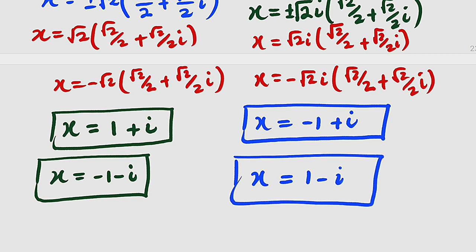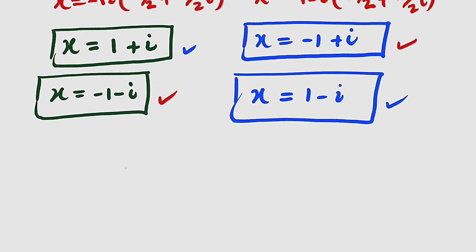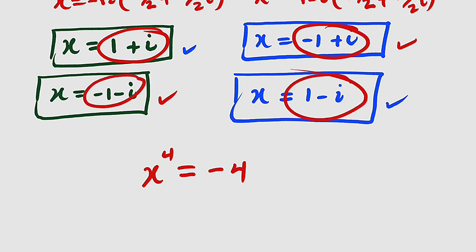If you observe, all four complex numbers are different. Another thing to note is that 1 plus i and negative 1 minus i are conjugates of each other. Likewise, negative 1 plus i and 1 minus i are conjugates of each other. So even if you obtain one complex solution, its conjugate will also be a solution. As an assignment: since we found x equals these four complex numbers and x to the power of 4 equals negative 4, take any of these solutions, raise it to the power of 4, and verify that you get negative 4.